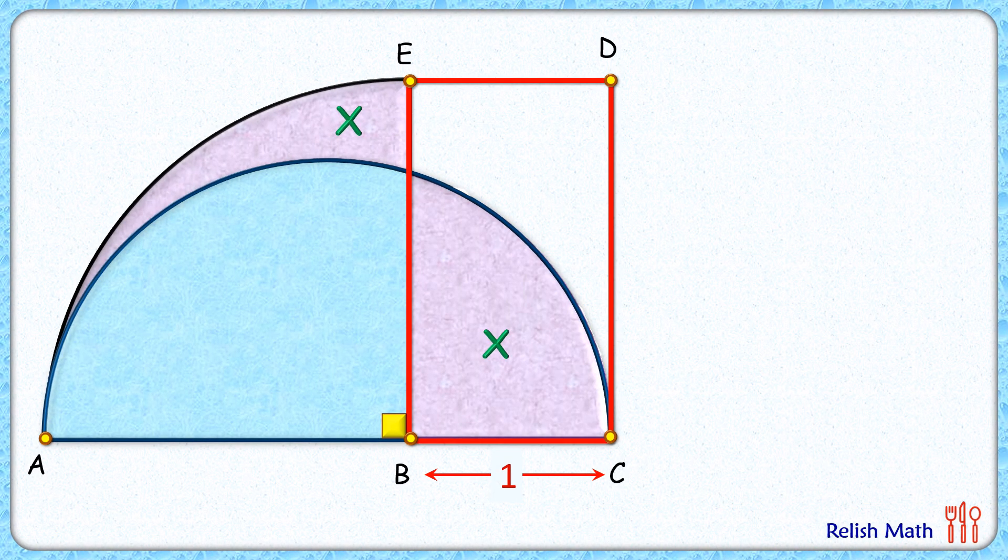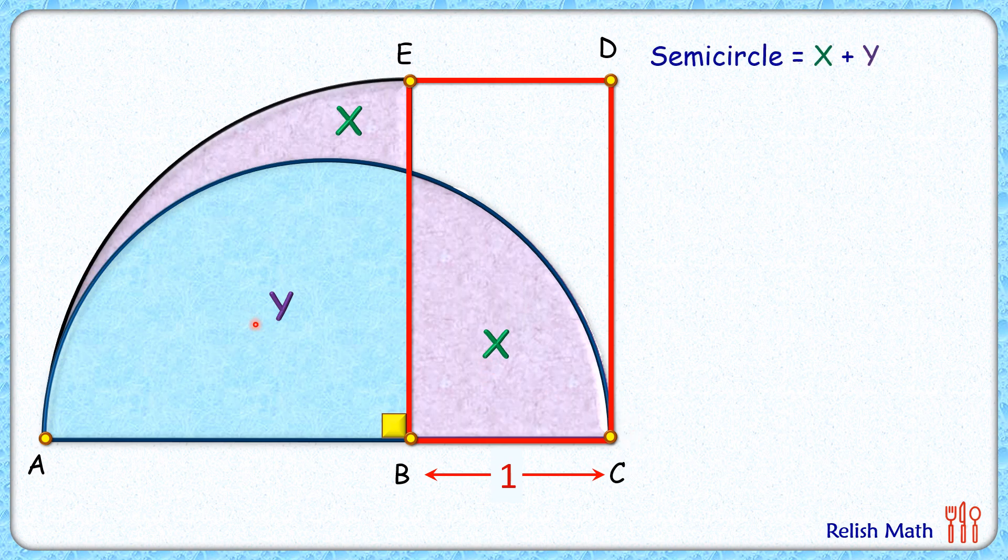Let's check this simple and elegant solution. Let's start by assuming the area of this blue region is y centimeter square. So area of this semicircle is nothing but x plus y. Also, area of this quadrant is x plus y. So we can say that area of semicircle and quadrant is equal to each other.